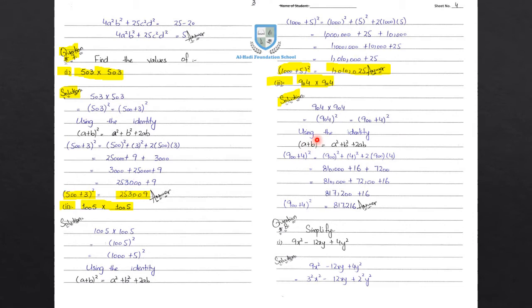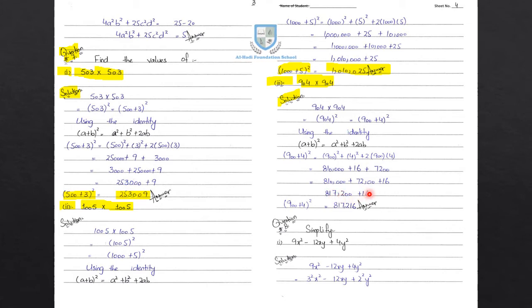900 plus 4 whole square equals 900 square plus 4 square plus 2 times 900 times 4. 900 square equals 810,000. 4 square equals 16. 2 times 900 times 4 equals 7200. So 810,000 plus 7200 plus 16 equals 817,216. Therefore 904 squared equals 817,216.